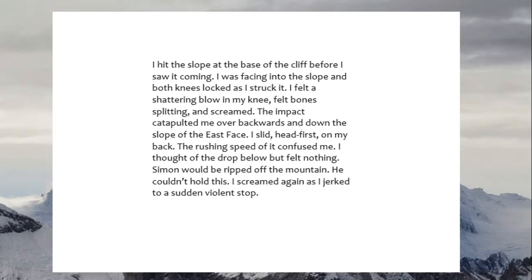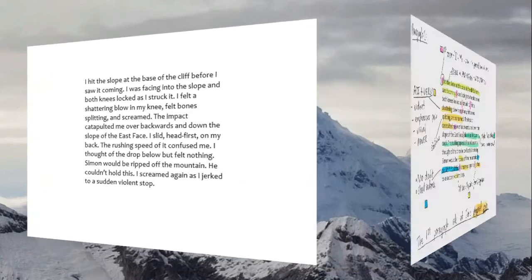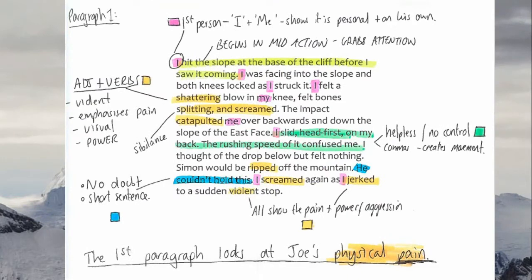Let's zoom in on the first paragraph: 'I hit the slope at the base of the cliff before I saw it coming. I was facing into the slope and both knees locked as I struck it.' This is quite dramatic because we begin in the middle of the action. We haven't got a slow build-up. We're not meeting the character — we go straight in with 'I hit the slope.' That grabs the attention of the reader. Also, the first verb used in the extract is 'hit' — it has connotations with violence, pain, fighting, and physical torture. Straight away we're using verbs that show we're in for a physical experience.